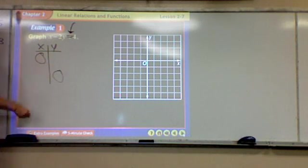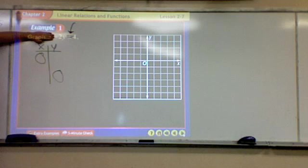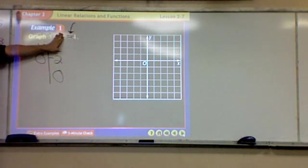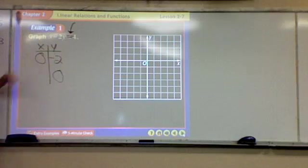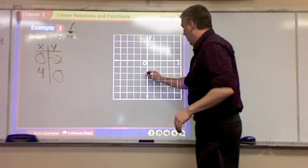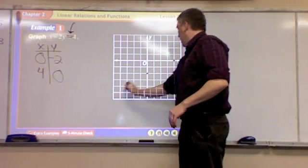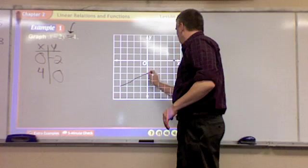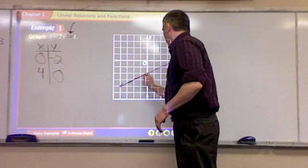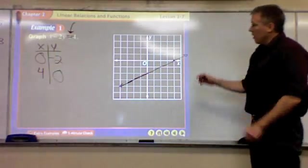Zero, zero. If x is zero, I have negative 2y equals 4. Y is? Negative 2. Negative 2. If y is zero, I have x equals 4. So we graph those two points, (0, -2) and (4, 0).